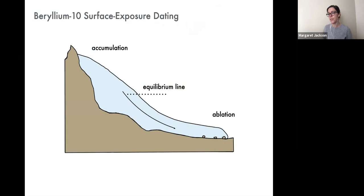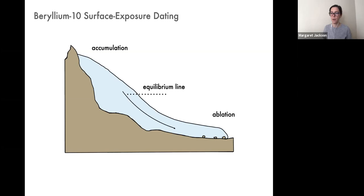I want to briefly introduce the beryllium-10 surface exposure dating method. If we imagine a simple idealized glacial system, we can split our glacier into a zone of accumulation, where the glacier gains mass through precipitation, and a zone of ablation, where it loses mass through sublimation or melting. The elevation where net accumulation and ablation are equal is called the equilibrium line, which is often roughly correlative with the freezing line elevation in our atmosphere.